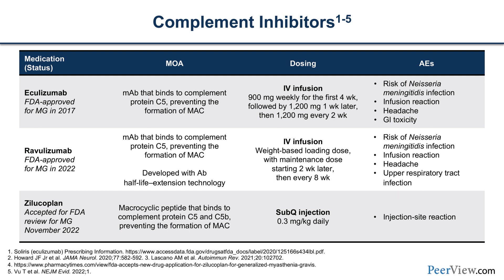Ravulizumab is a cousin of eculizumab — essentially the same drug engineered to go from an every-two-week infusion cycle to every eight weeks. It targets the same C5 complement protein, is weight-based, and its risks are identical. All complement inhibitors have essentially the same adverse event profiles. Then there is zilucoplan, which is a little bit different — it was at the FDA at the end of 2022 and was hopefully to be approved in the first to second quarter of 2023.